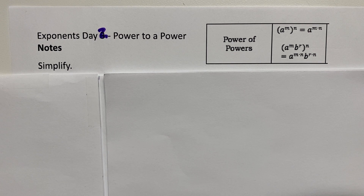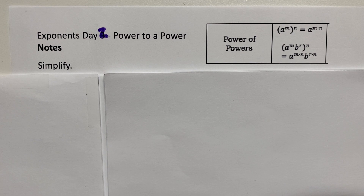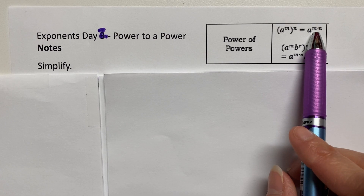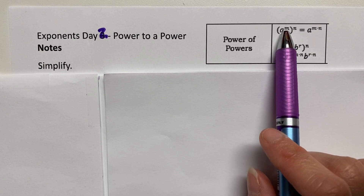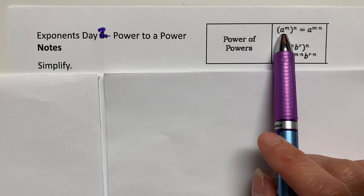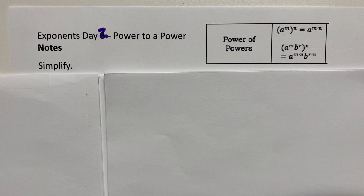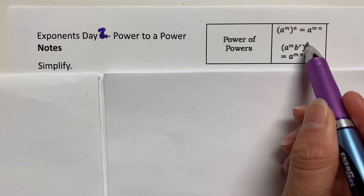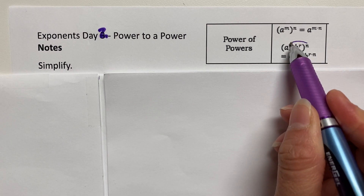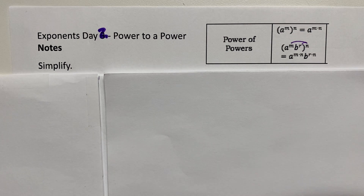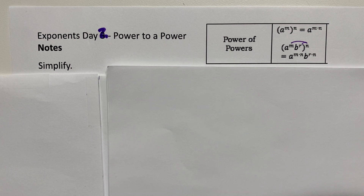When it's power to a power, you're raising a variable with an exponent to another power. You're going to multiply your exponents — that applies to just one term inside the parentheses. If you have more than one term inside the parentheses, you need to distribute the exponent to each term inside and multiply the exponents. You're going to leave the base the same.